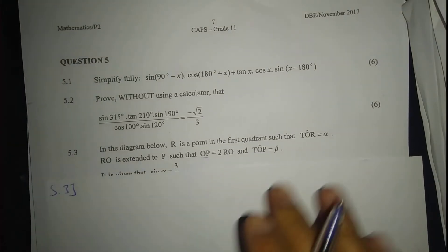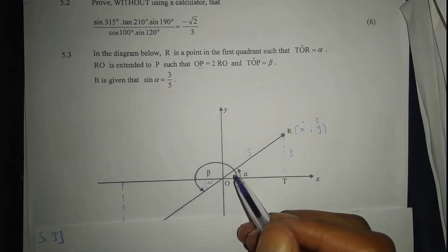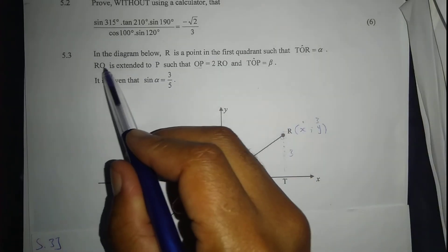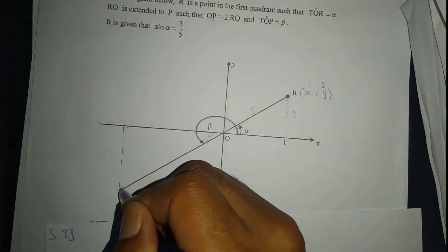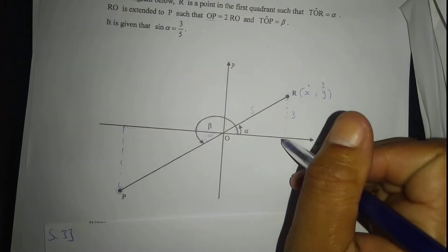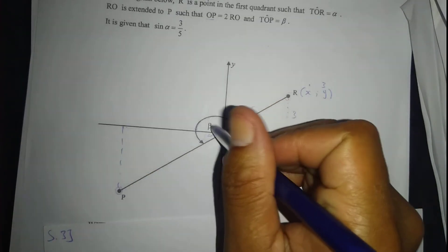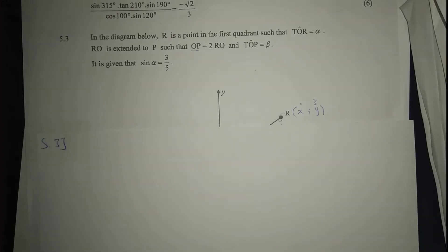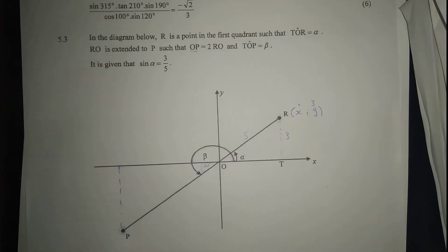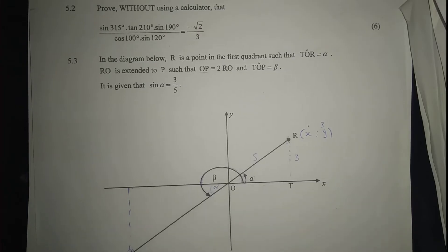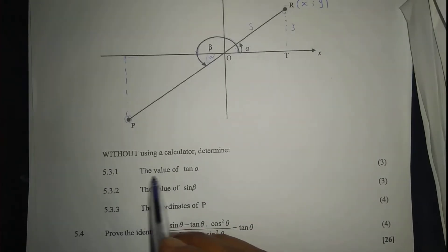Now for 5.3. R is a point in the first quadrant such that OR equals alpha. OR is extended to P such that OP equals two times OR. This angle is equal to beta. It is given that sin alpha equals 3 over 5. We need to determine, without using a calculator, the value of tan alpha.